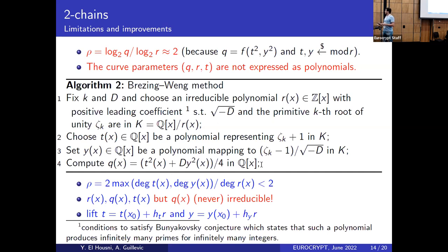Among the families examined — Barreto-Lynn-Scott, Barreto-Naehrig, and KSS families — the resulting polynomial q(x) for the outer curve's base field is never irreducible. We are therefore obliged to lift the polynomial parameters, adjusting the Frobenius trace and CM equation with respect to this r to make q(x) an irreducible polynomial satisfying the Bunyakovsky conjecture, so that it can output primes.